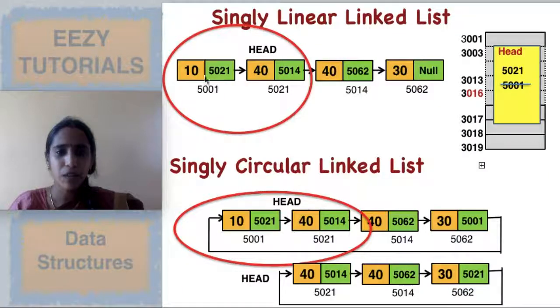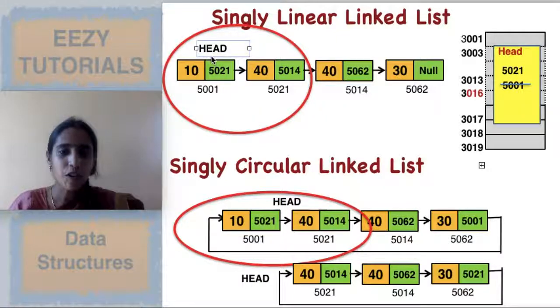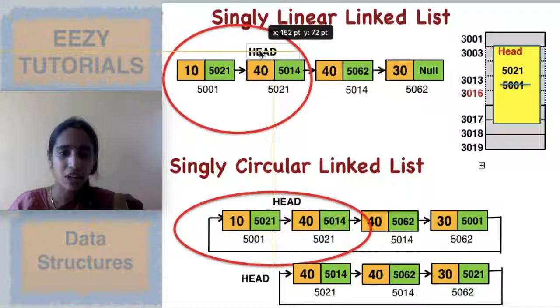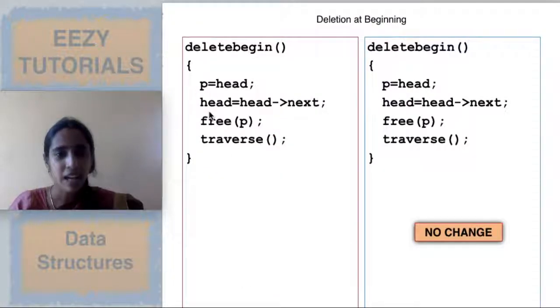So what you will be doing? First you will be having a pointer P and it will be pointing to the first node head. Before deletion you will move the head to the next node: head equals head of next. Then you will delete P. So only three lines are there. P equals head, head equals head of next, free of P.